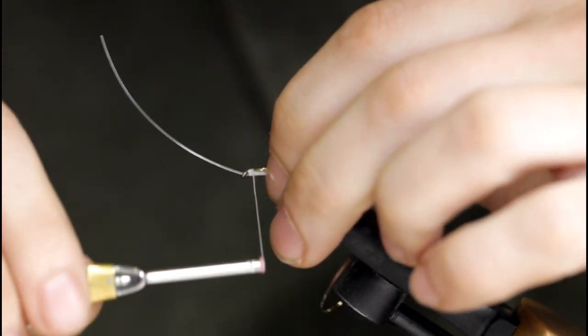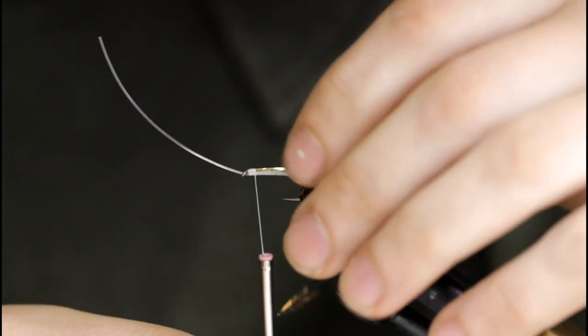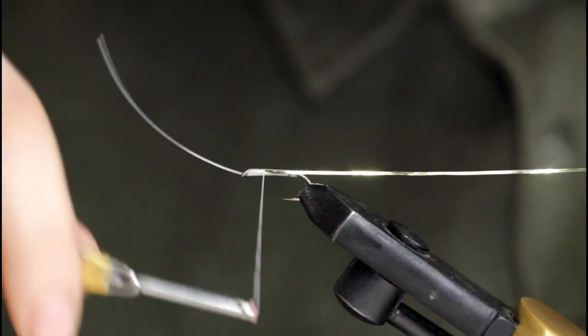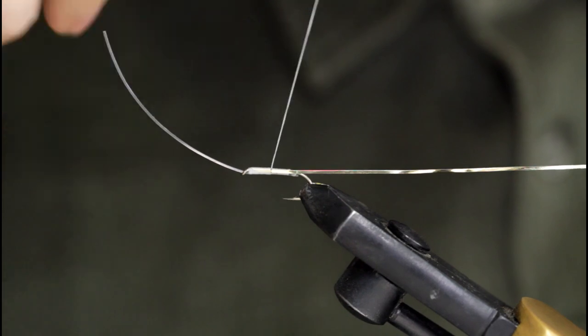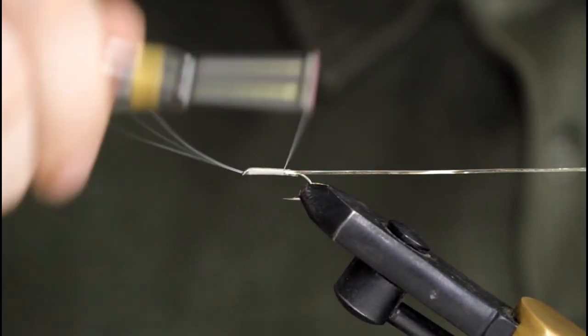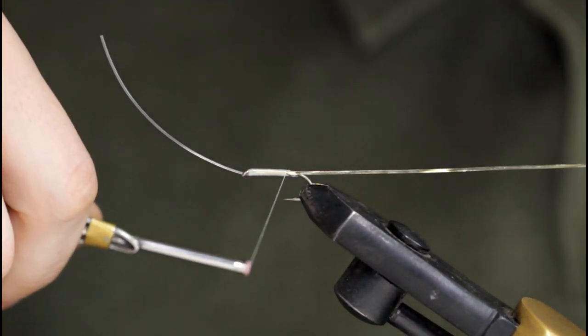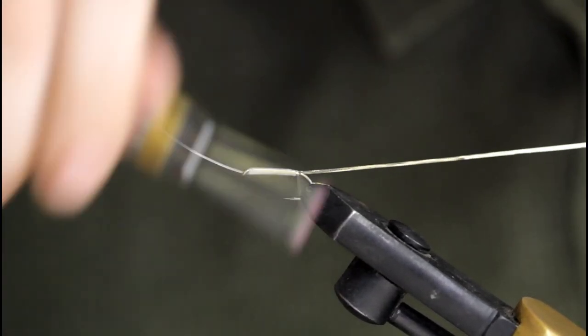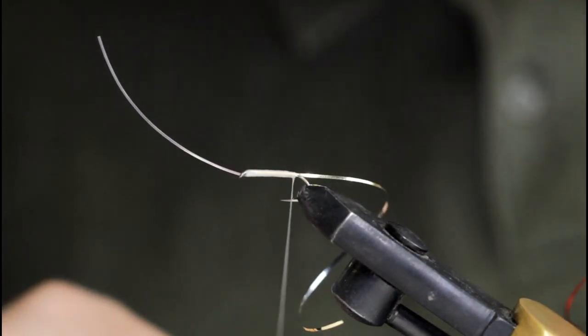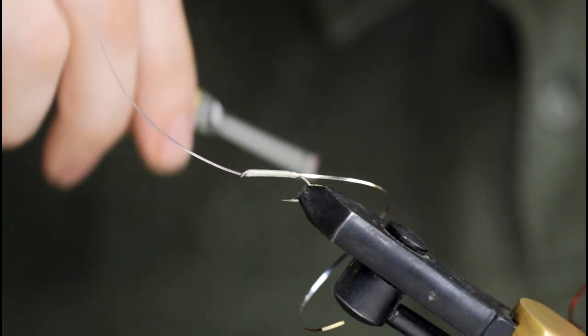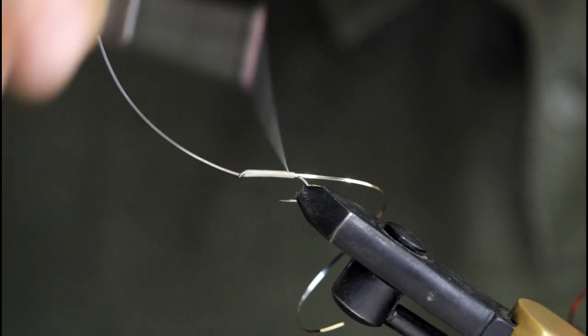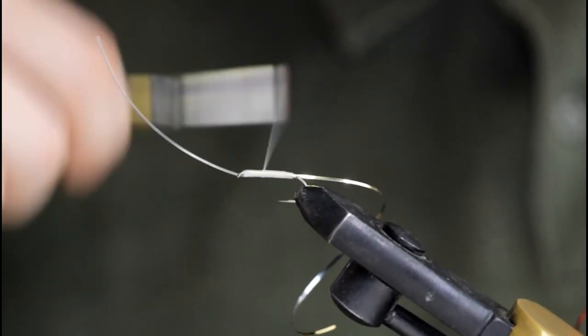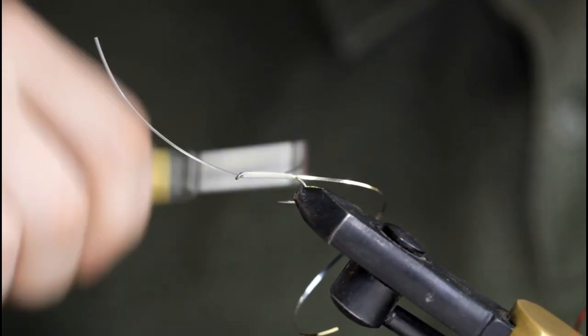So once I get this tinsel on here, I'm going to just take some touching turns down to where I stopped the thread before. Now I'm going to work my way back up, applying a lot of pressure right here. I'm really trying to make sure I bond this monofilament to the hook, so I've got to apply as much pressure as possible here.